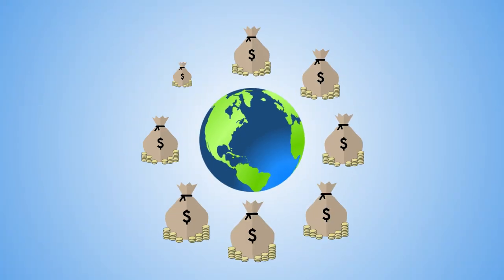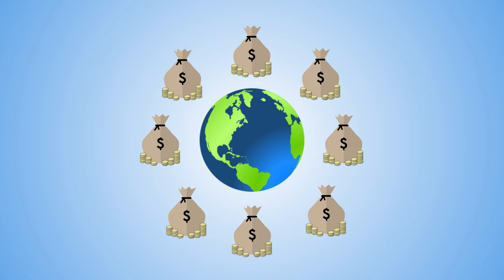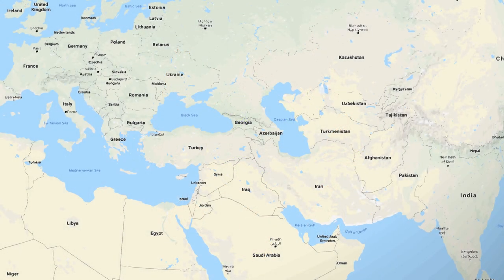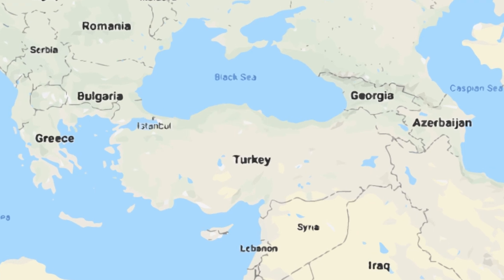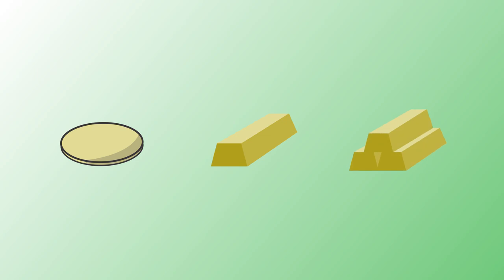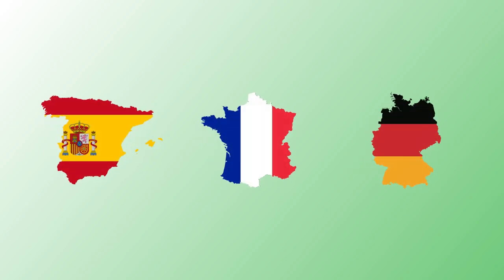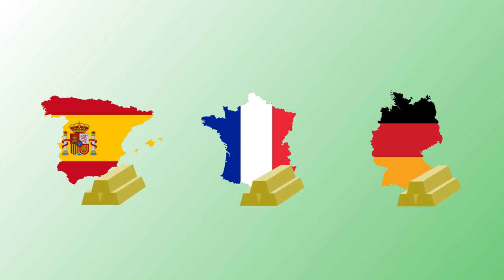Gold has been the most prevalent currency throughout the history of the world, with its first uses tracing back to 643 BC in modern-day Turkey. The value of wealth soon became the amount of gold one country or individual owned, leading the powerful nations of Europe to exploit their ability to explore and pursue the riches of Mother Nature.